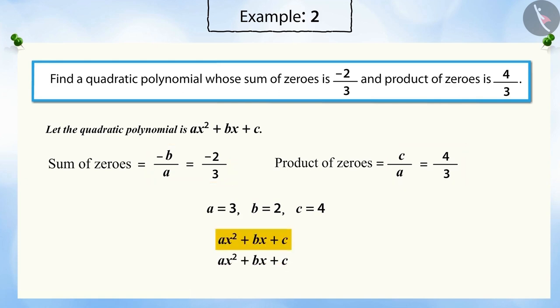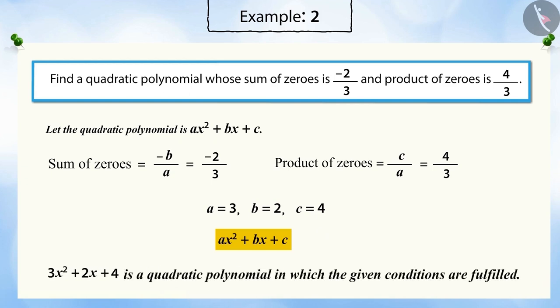Substituting the values of a, b, and c, we get the quadratic polynomial 3x² + 2x + 4, which fulfills the given conditions.